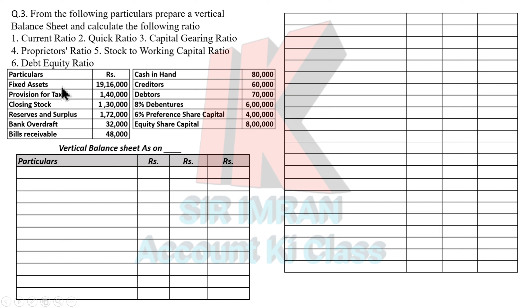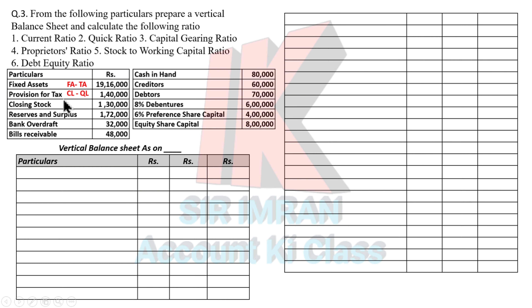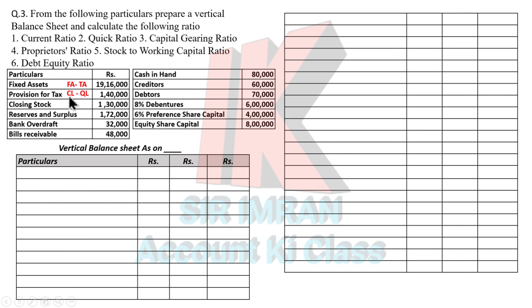Let's tick-mark the entries. Fixed assets will appear below the application of fund as a tangible asset — nothing else is specified. Provision for tax is a current liability, specifically a quick liability. In current liabilities there are two types: quick liability and non-quick liability. The only non-quick liability is bank overdraft; all remaining ones are quick liabilities. Similarly in current assets there are quick assets and non-quick assets — non-quick assets include closing stock and prepaid.